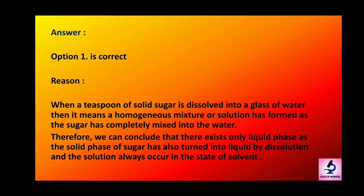In a simple way — when we make shikanji, when we add water and sugar, the sugar dissolves and it is present in a liquid state. When we add a teaspoon of sugar to dissolve in water, it will be in a liquid state. Because a solution always takes the state of the solvent. If the solvent is liquid, the solution is liquid. If the solvent is gas, the solution is gas.